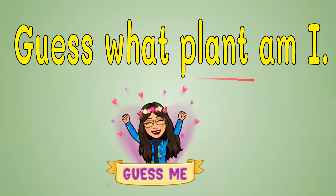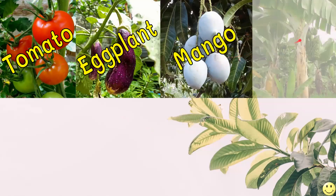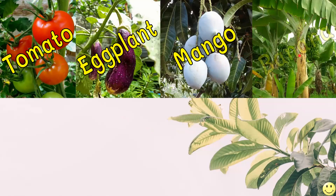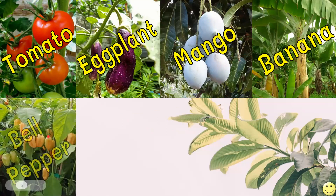Let's guess what plant am I. This is a guessing game. Let's guess the plant. Are you ready? Great. Let's start with this one. What is this? Yes, it's a tomato. This one? Correct, it's eggplant. How about this? Right, it's mango. This one? Yes, it's banana. Correct. This one? Bell pepper.